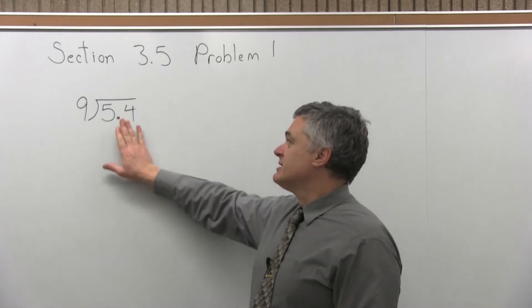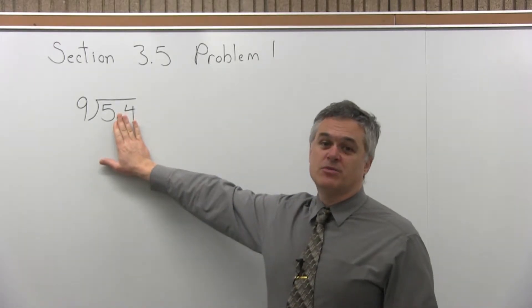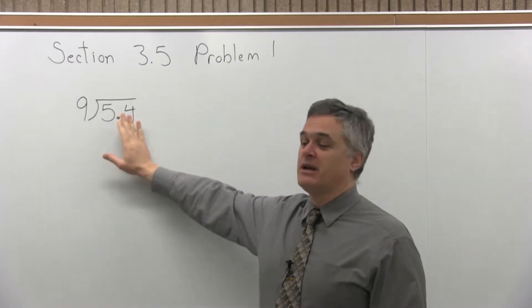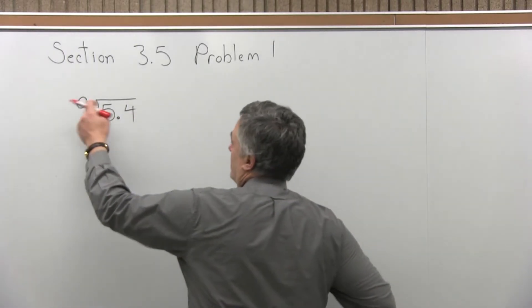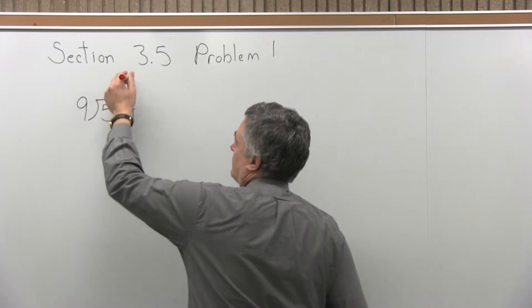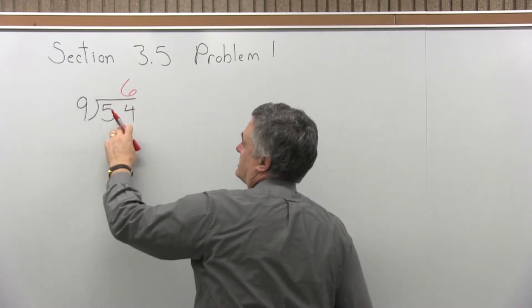So for something like this, initially what you want to do is just ignore the decimal point and do 54 divided by 9. Well, because 9 won't fit into 5, but it will go into 54 six times, and now you take the decimal into account.